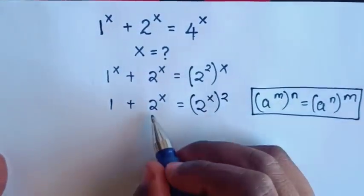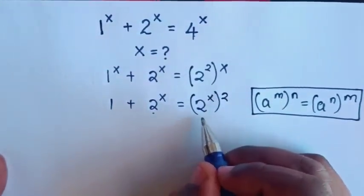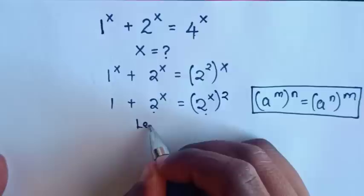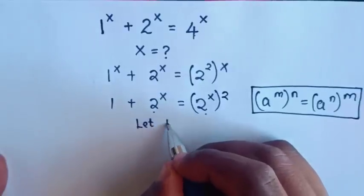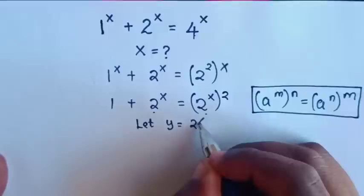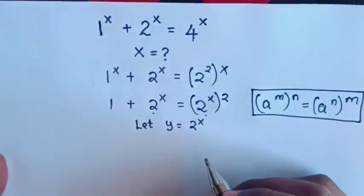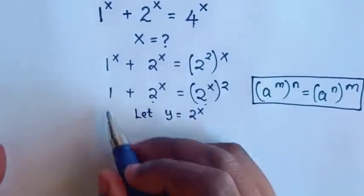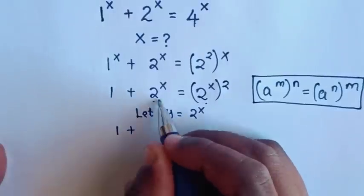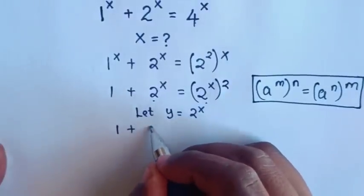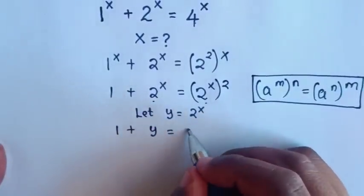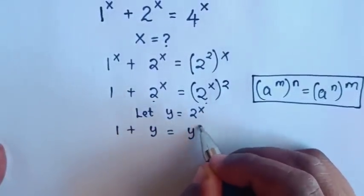Then in here, 2 power x is common, so we let y is equal to 2 power x. Then in our equation, it will be 1 plus y is equal to y squared.